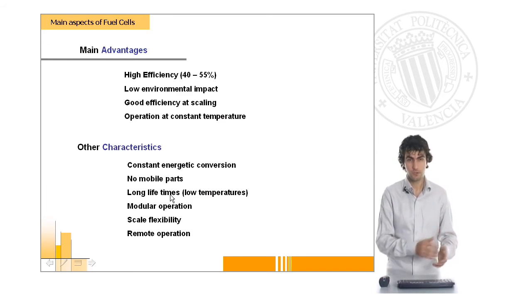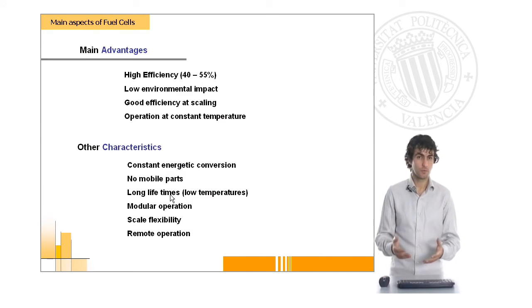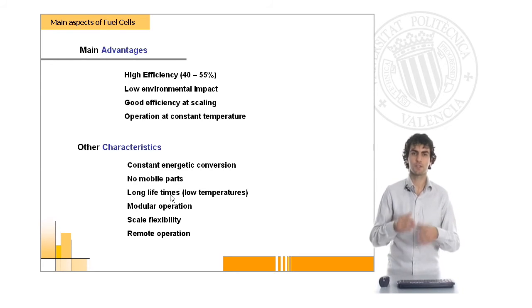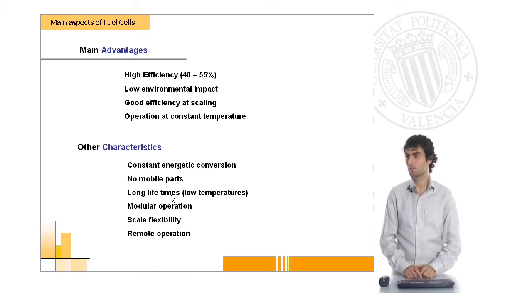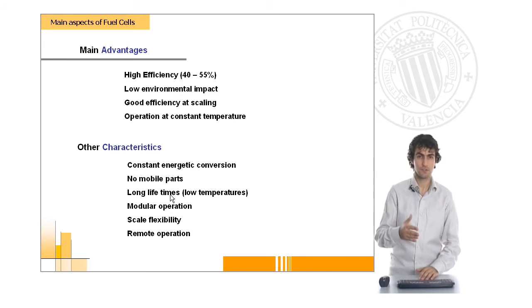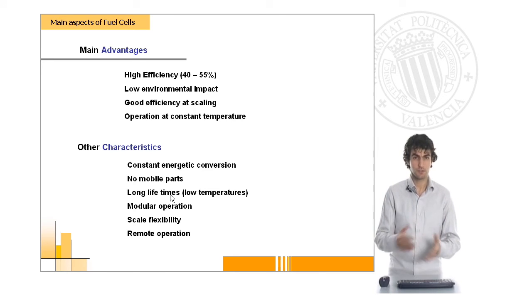As we mentioned before, the most important advantage of fuel cells is that this system allows us to obtain very high efficient energy, because the conversion is nearly direct. And because we're not going to need any temperature gradient, we won't have much heat losses at that point. So, this will be a very good energy conversion system for operating at constant temperature.